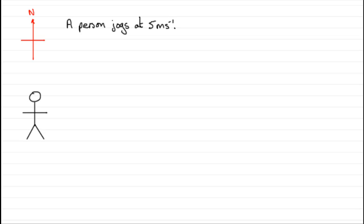What do we mean by a vector quantity? To answer that, let's suppose we take a person here who can jog around at, say, 5 meters per second.